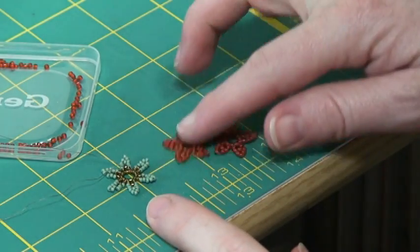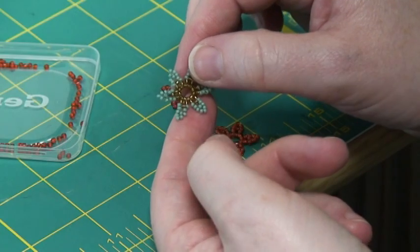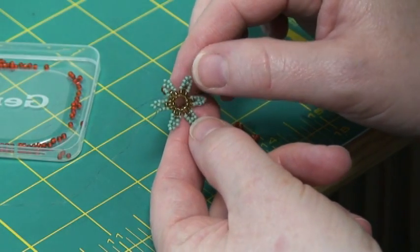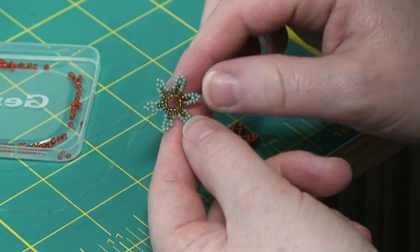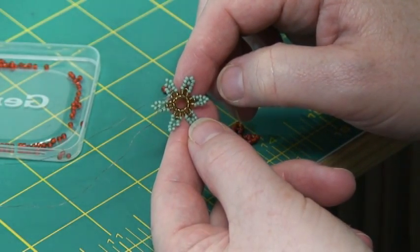This one's done with kind of a green silver lined center and some flat beads. This has six petals. So to do this one you would start with twelve center beads instead of ten, but it's made the same way.